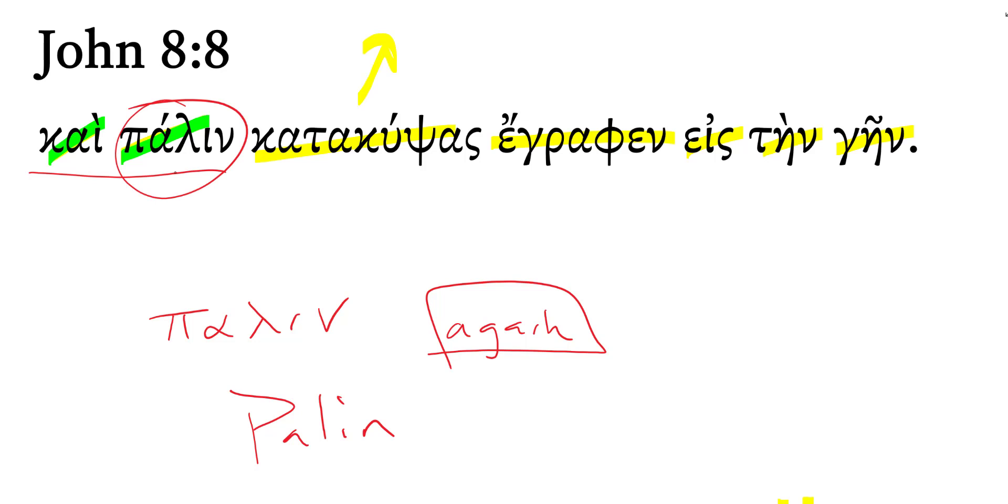And again, remembering here, Jesus again stooping down. And this is a participle from Katakupdo, to stoop down. Katakupdo, and it's an aorist active participle. It's nominative, masculine, singular, because it's describing Jesus here.